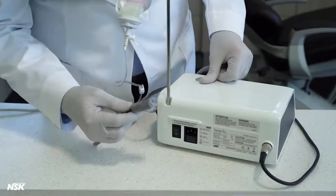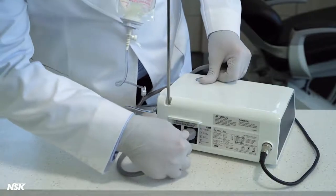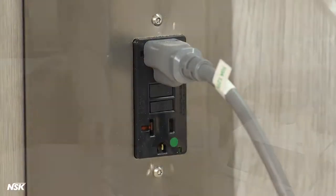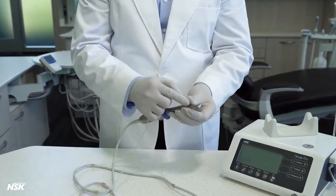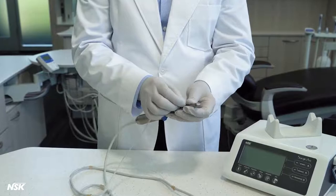Connect the AC power cord to the power socket at the back of the control unit, then plug into a power outlet. There are two ways to connect the irrigation tube to the implant attachment, depending on the type of the drill being used in the operation.